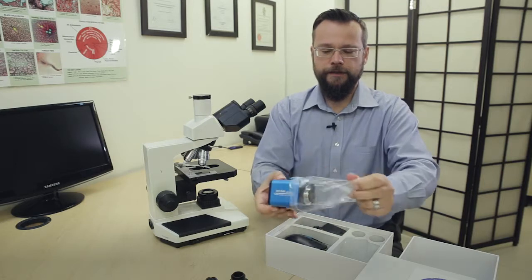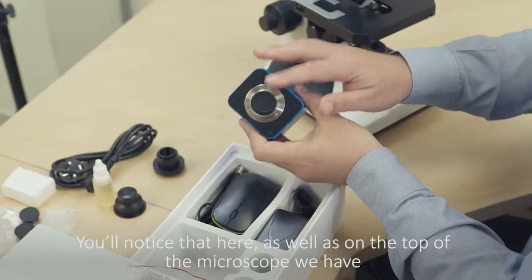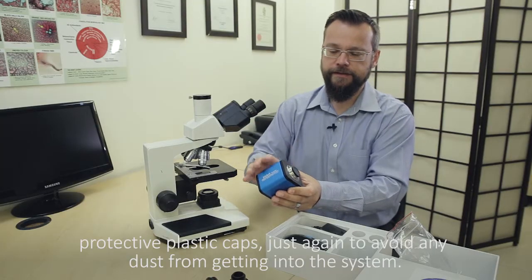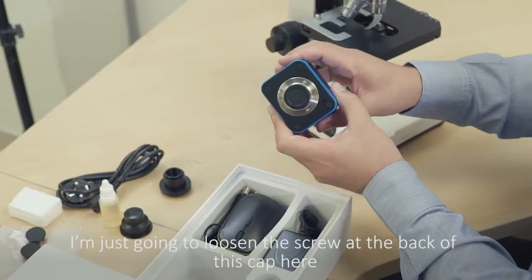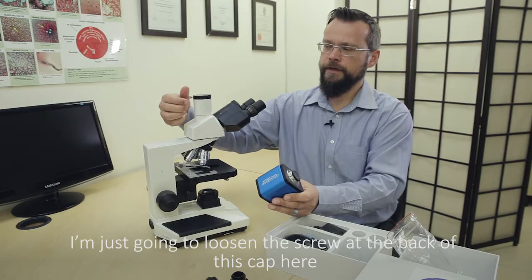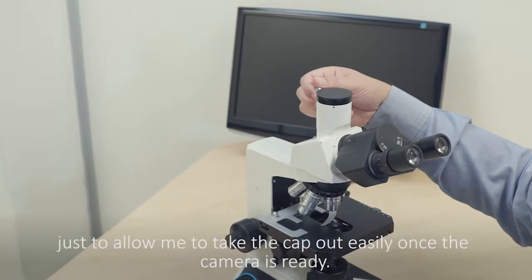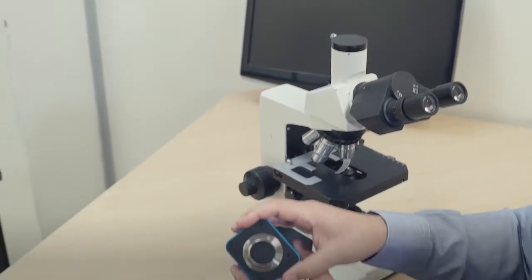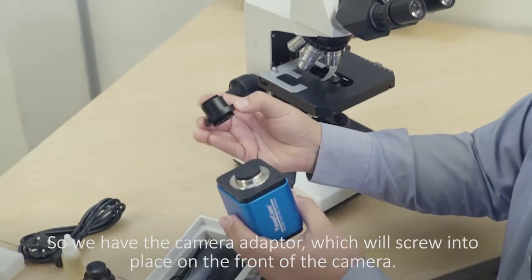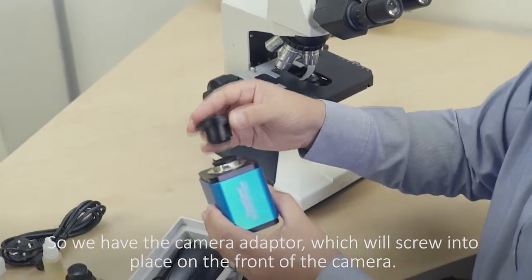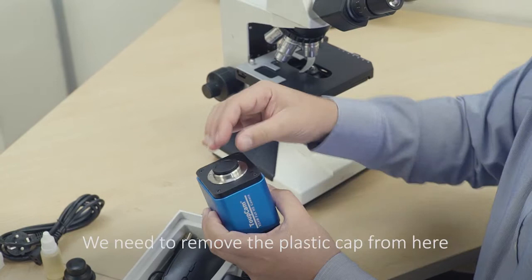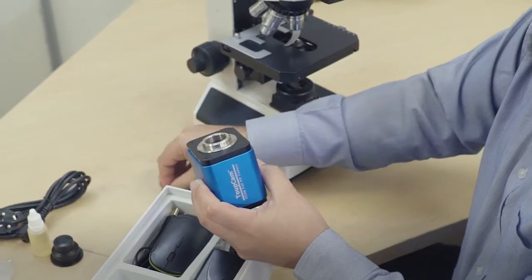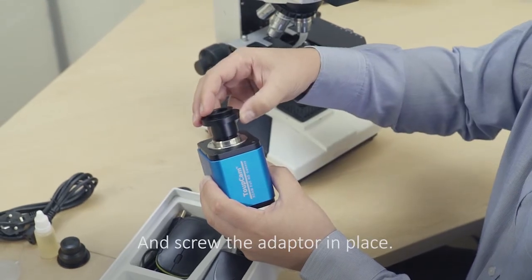You'll notice that here as well as on the top of the microscope we have protective plastic caps just again to avoid any dust from getting into the system. So I'm just going to loosen the screw at the back of this cap here just to allow me to take the cap out easily once the camera is ready. So we have the camera adapter which will screw into place on the front of the camera. We'll need to remove the plastic cap from here, screw the adapter in place.